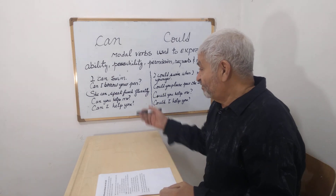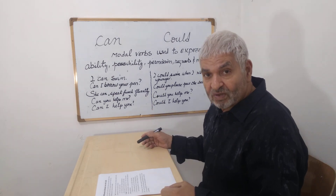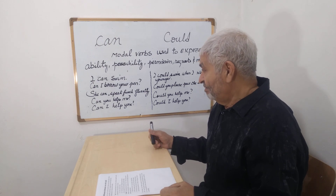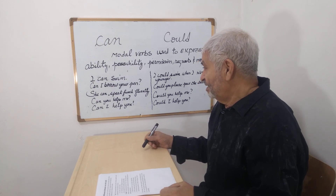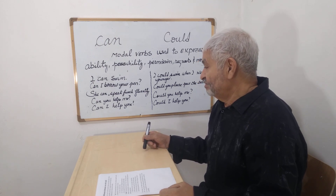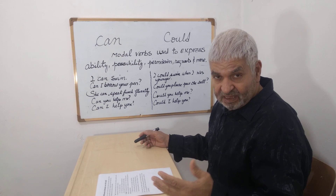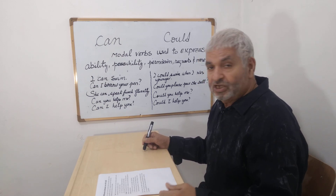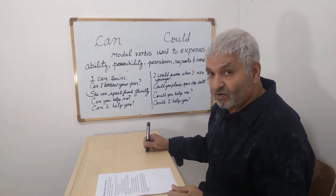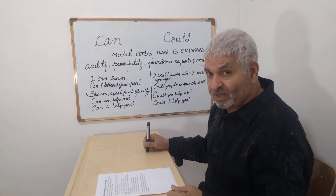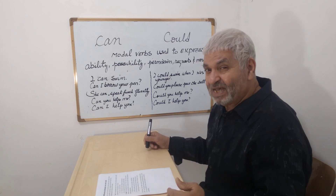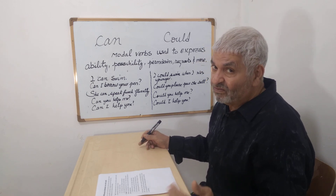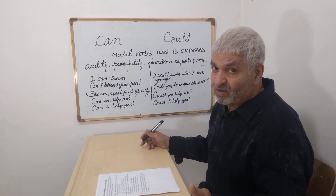'She can speak French fluently' — that means she can speak it now. When you say 'She could speak French fluently', that means in the past. We don't know now if she speaks fluently or not.